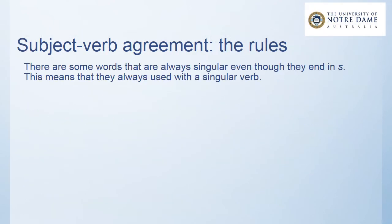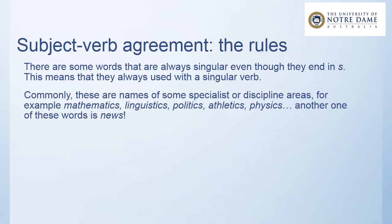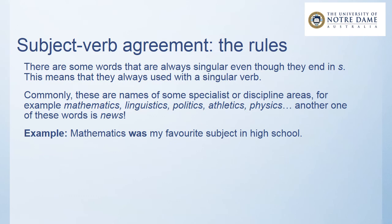There are some words that are always singular, even though they end in 's.' This means they are always used with a singular verb. Commonly, these are names of specialist or discipline areas — for example: Mathematics, Linguistics, Politics, Athletics, Physics. Another such word is 'news.' For example: 'Mathematics was my favourite subject in high school.' Mathematics ends with an 's' and might look plural, but it does not take a plural verb.